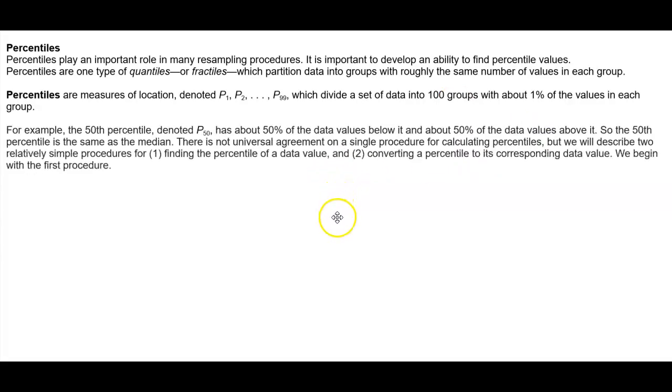For example, the 50th percentile, denoted P₅₀, has about 50% of the data values below it and about 50% of the data values above it. So the 50th percentile is the same as the median. There is not a universal agreement on a single procedure for calculating percentiles, but we will describe two relatively simple procedures: one, finding the percentile of a data value, and two, converting a percentile to its corresponding data value. We begin with the first procedure.